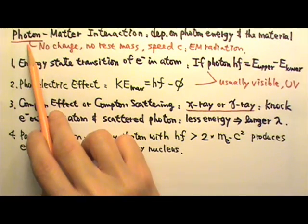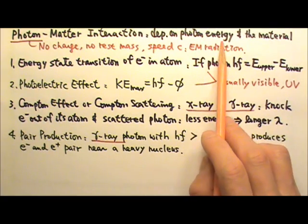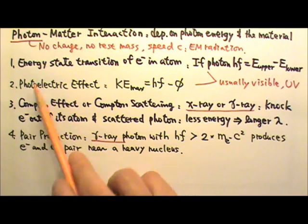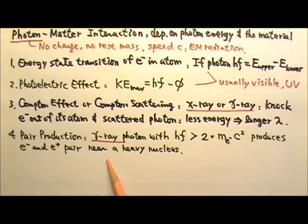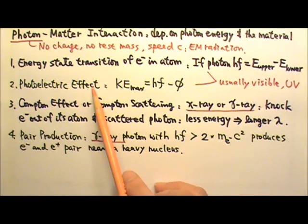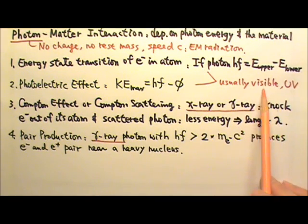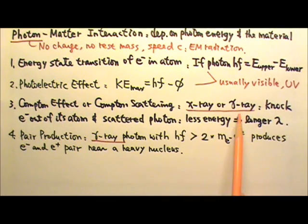Again, the type of photon interaction depends on the energy of the photon and the material the photon interacts with. Although there is overlap in the types of photons involved in these various interactions, usually electron or atom state transition and photoelectric effect involve visible light and UV photons. Compton effect involves higher energy X-ray or gamma ray photons. As for pair production, it involves even higher energy gamma ray photons.